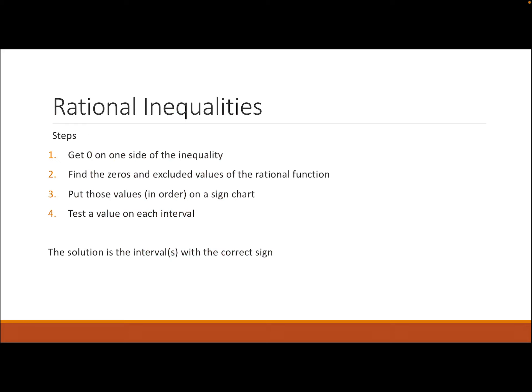Next, we have rational inequalities, which are slightly different. First, get 0 on one side of the inequality. Then find the zeros and excluded values of the rational function and put them in order on a sign chart. Test a value on each interval; the solution is the intervals with the correct sign — positive for greater than, negative for less than.